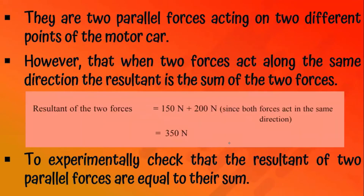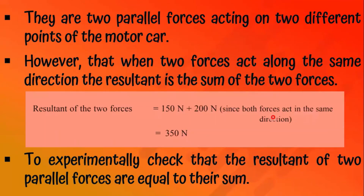Resultant of two parallel forces: there are two parallel forces acting on two different points of a motor car. When two forces act along the same direction, the resultant is the sum of those two forces. Resultant = 150 N + 200 N = 350 Newtons, since both forces act in the same direction. Let us experimentally check that the resultant of two parallel forces equals their sum.